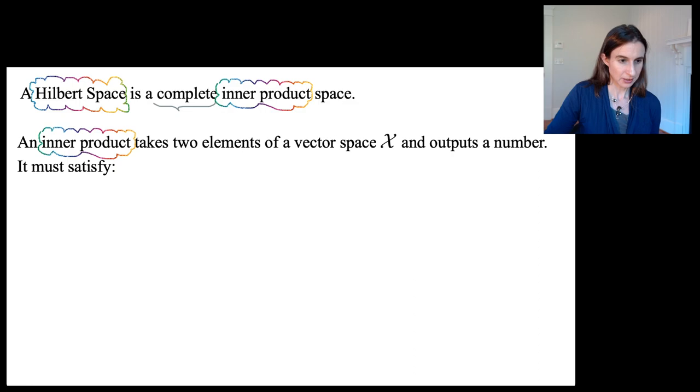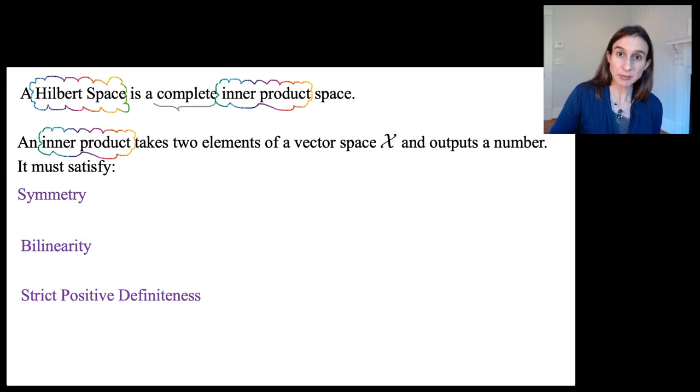So an inner product takes two elements of a vector space and outputs a number, and it must satisfy three properties. The three properties are symmetry, bilinearity, and strict positive definiteness.